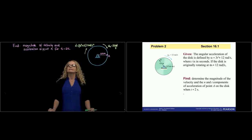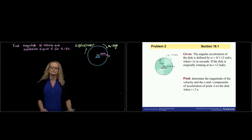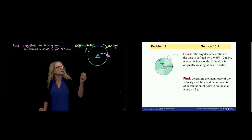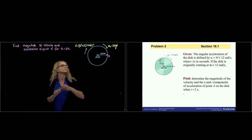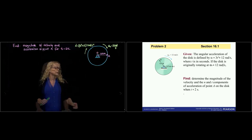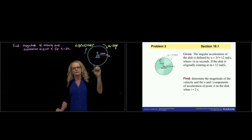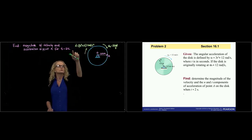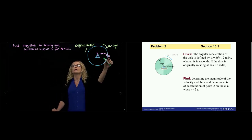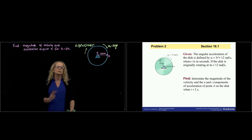This is example number 2 of section 16.1. We have a disk that is rotating around point O, which is the fixed center of rotation. Having information about the initial angular velocity and the function of angular acceleration with respect to time, we want to find the velocity and the acceleration of point A at 2 seconds.